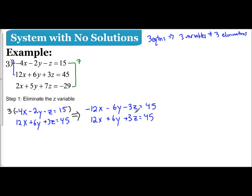So I see I have my opposites: -3z and 3z. So that means I'm going to add vertically. And what that's going to do is cancel out my -3z and 3z. But look at this: -12x and 12x cancel out as well, and -6y and 6y cancel out as well. So I'm left with just 0.